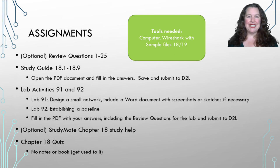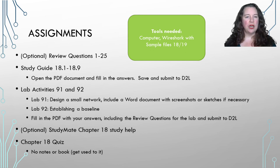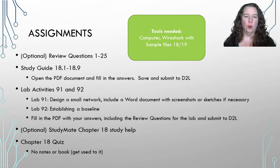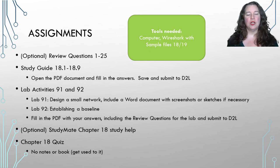We made it to the end of chapter 18. For this chapter you've got review questions and a study guide. There are only two lab activities. Lab 91 is to design a small network — actually sketch it out using a graphical interface such as Draw.io, Visio, Paint, Word, or Packet Tracer screenshots. Design your network and answer the different questions the lab walks you through.